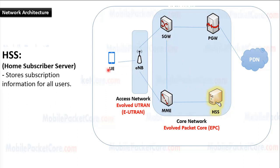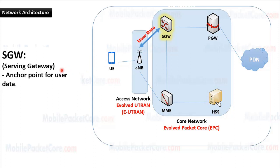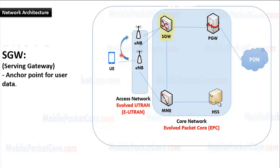The HSS refers to Home Subscriber Server. It contains a database that stores the subscription information for every user in the network. While the SGW refers to Serving Gateway. During session establishment, the MME will exchange signaling messages with the E-Node B and the SGW, and will instruct the E-Node B and the SGW to establish a tunnel to directly pass user plane data between each other, so that user data will move directly between the E-Node B and the SGW without passing by the MME. Therefore, the SGW is the first point in the Evolved Packet Core that receives user plane data from the E-Node B. In turn, the SGW serves as the mobility anchor point for user data while the UE is moving between different E-Node Bs.